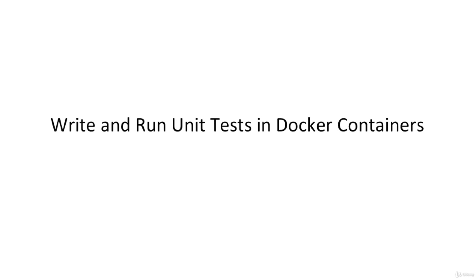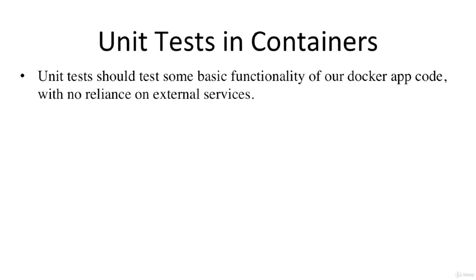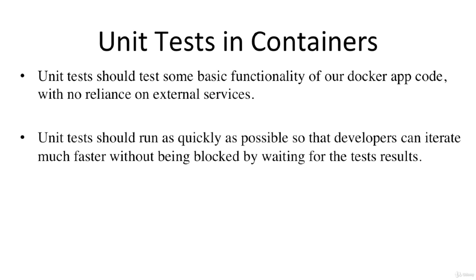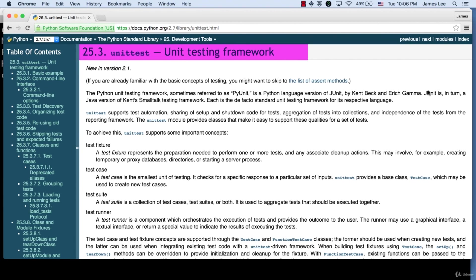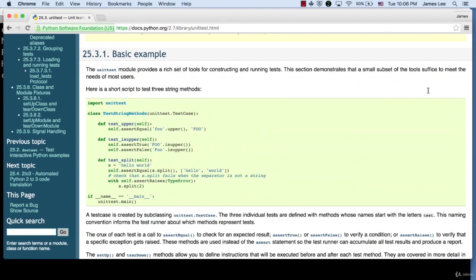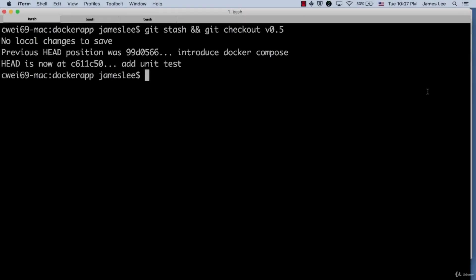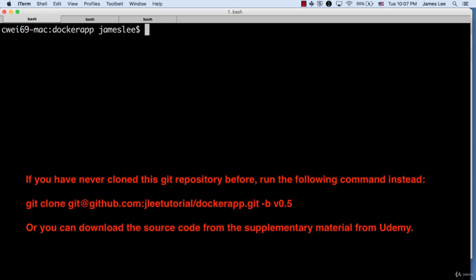In this lecture, we'll see how to write unit tests for our application and run them inside a container. These unit tests should test basic functionality of our Docker app code with no reliance on external services. Ideally, all unit tests should run as quickly as possible so developers can iterate faster without waiting for test results. Docker containers can be spun up in seconds and create a clean, isolated environment — a great tool for running unit tests. We'll use Python's unittest framework. The test cases have already been written and uploaded to GitHub; download with git stash and git checkout v0.5.